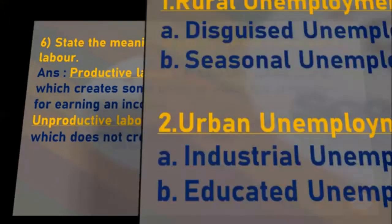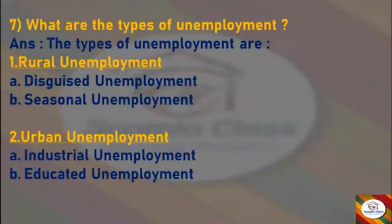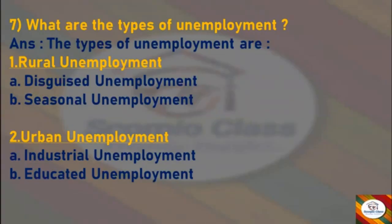Next question: what are the types of unemployment? Answer — the types of unemployment are rural unemployment and urban unemployment. Under rural unemployment we have disguised unemployment and seasonal unemployment. Under urban unemployment we have industrial unemployment and educated unemployment.